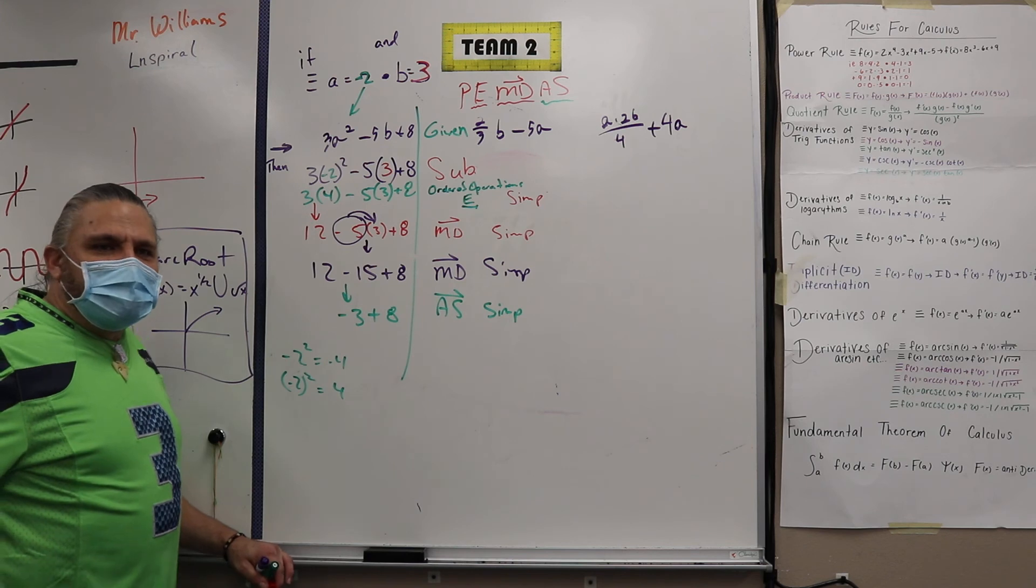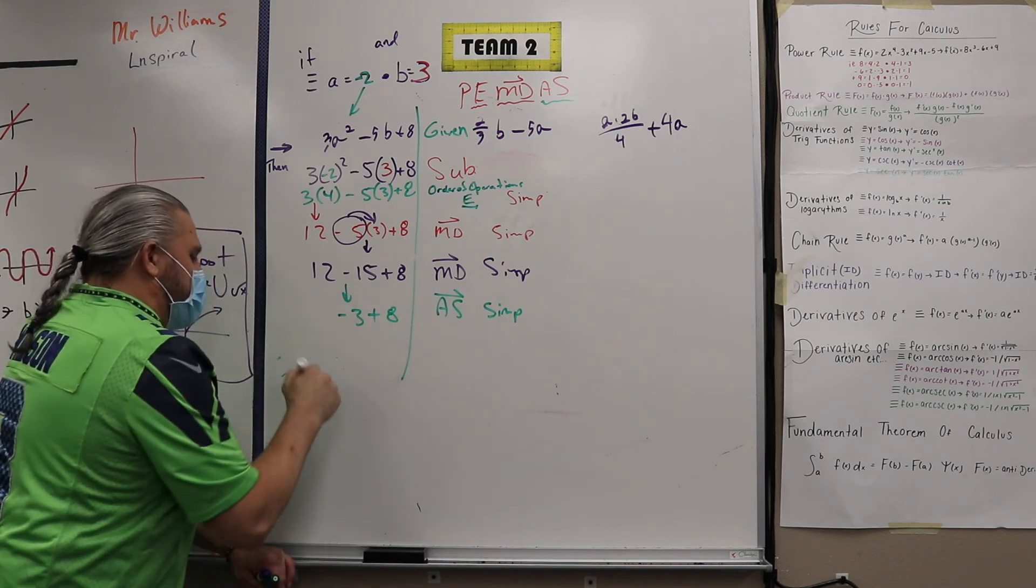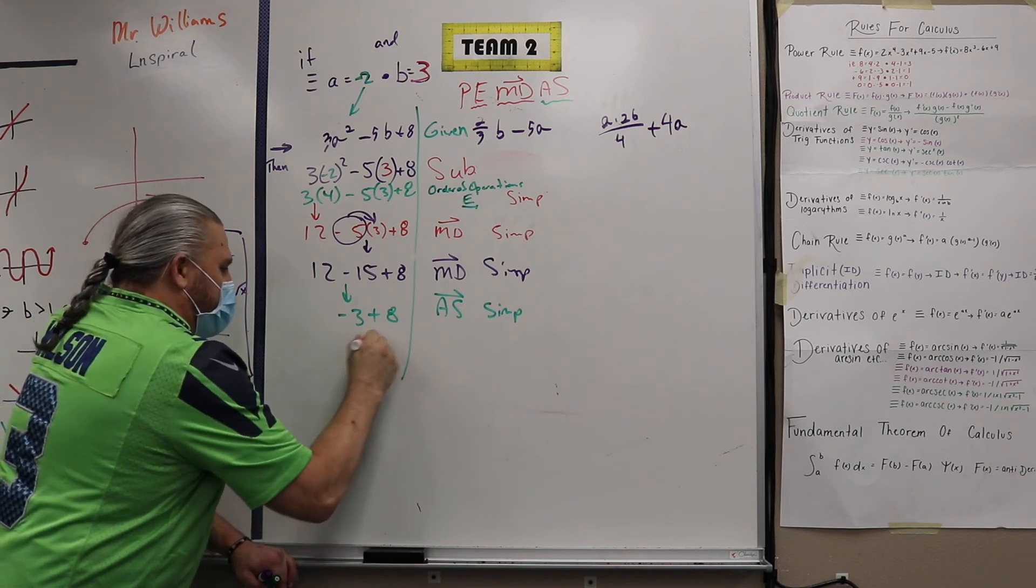Does that make sense? And then negative 3 plus 8. 5. And again, what step was that? Still AS, simplifying.